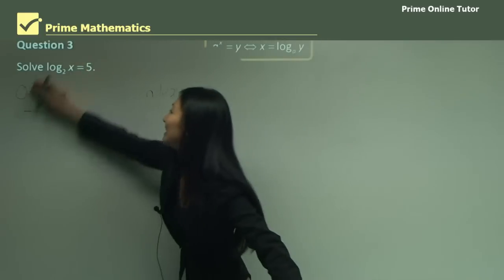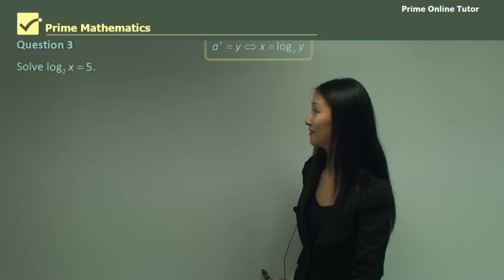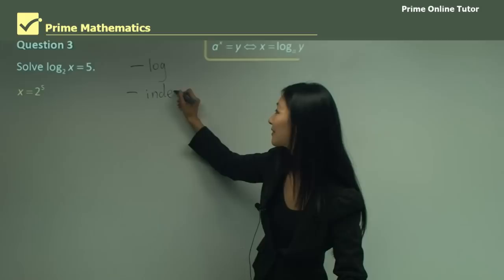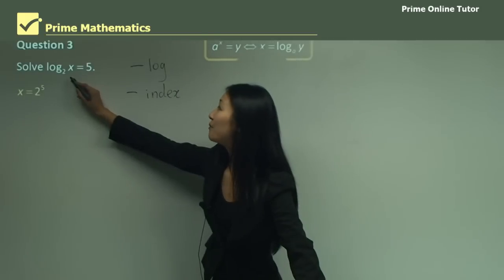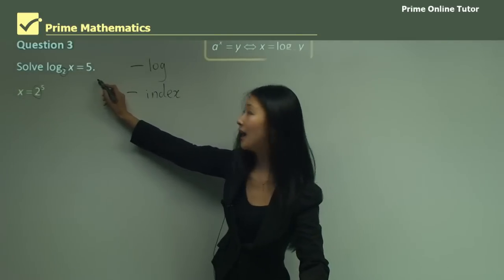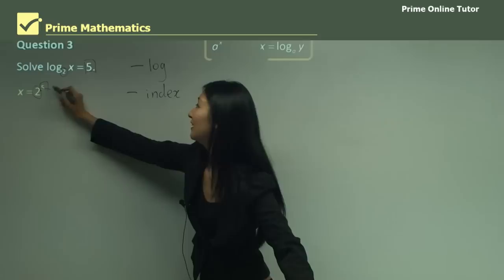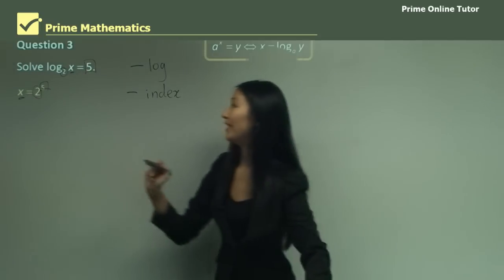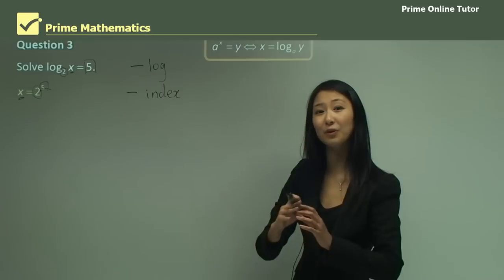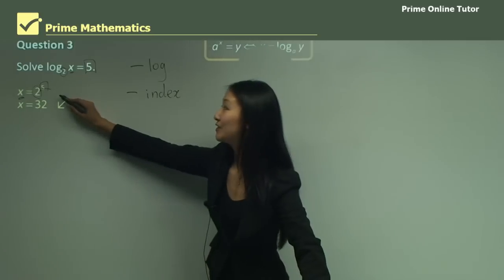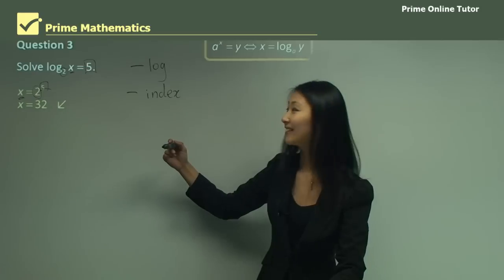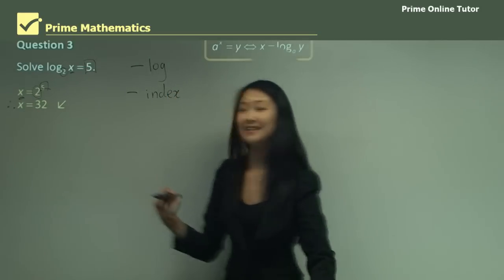Question 3 is similar: solve log base 2, x equals 5. We change it from log form into index form. The base is 2, the log equals 5 so 5 becomes the index, and x moves over. So x equals 2 to the power of 5. Remember, that's not the final answer — we must solve completely. 2 to the power of 5 equals 32, so therefore x equals 32.